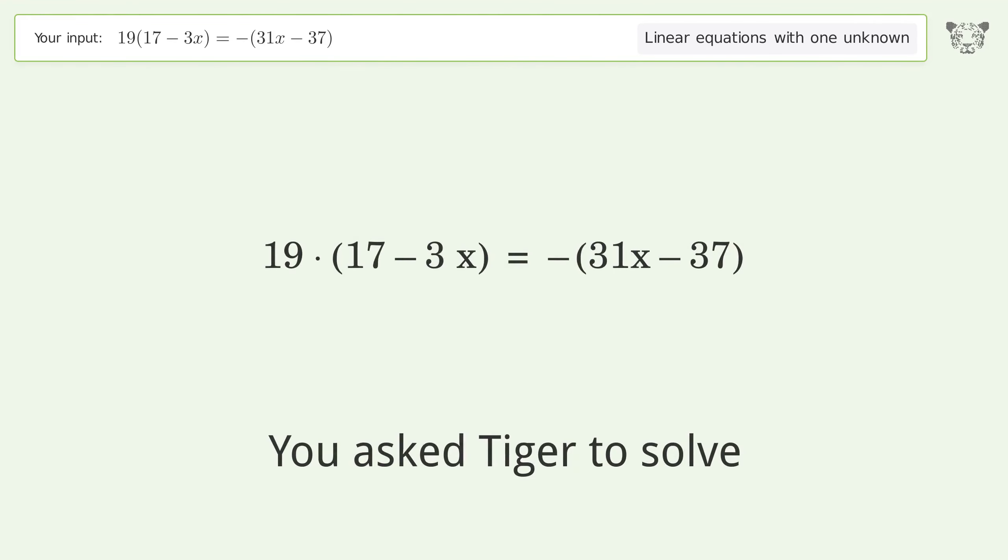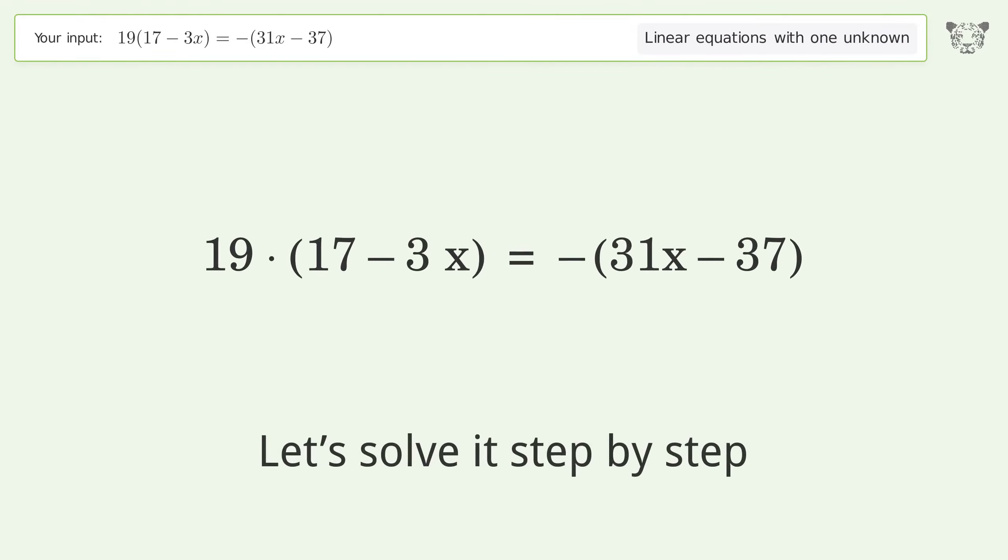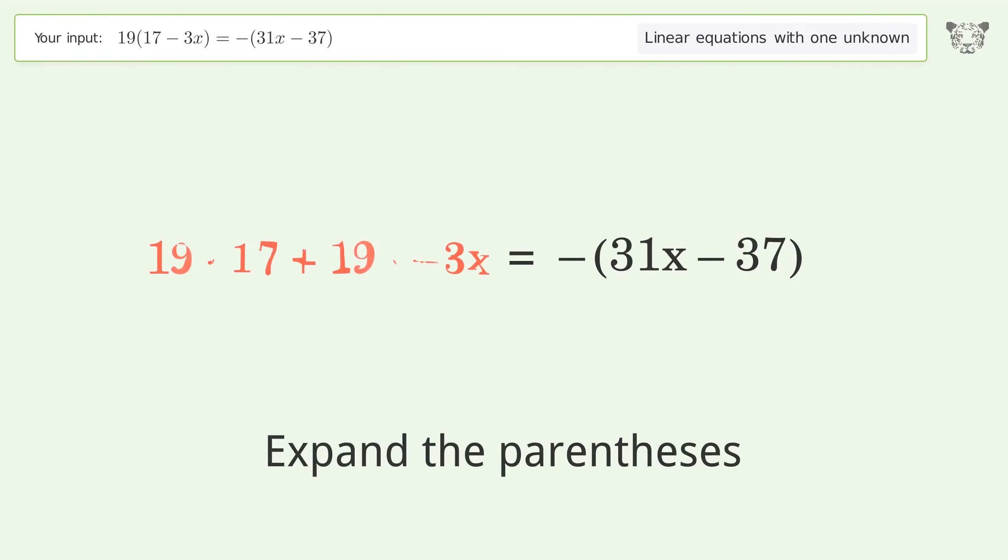You asked Tiger to solve this problem dealing with linear equations with one unknown. The final result is x equals 11. Let's solve it step by step: simplify the expression, expand the parentheses, simplify the arithmetic, and multiply the coefficients.